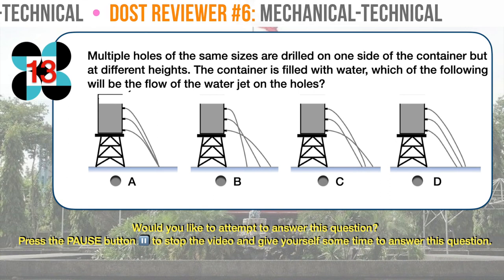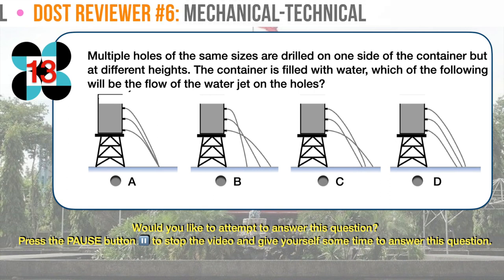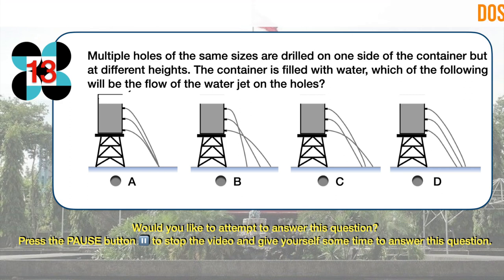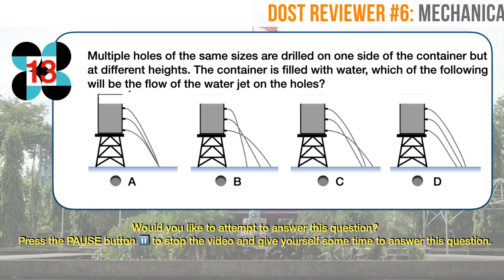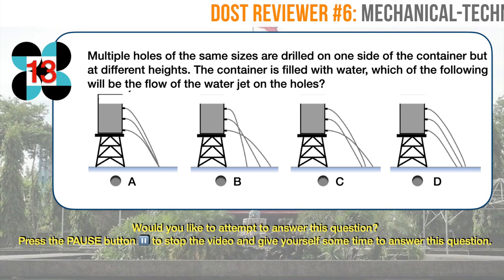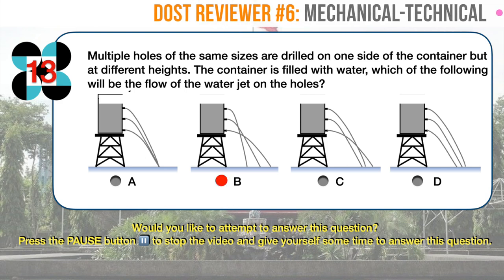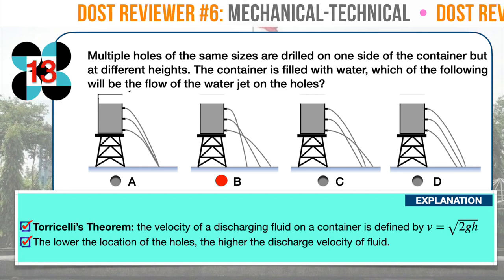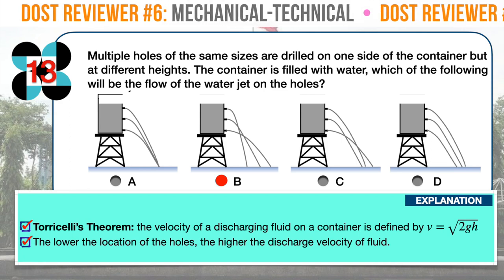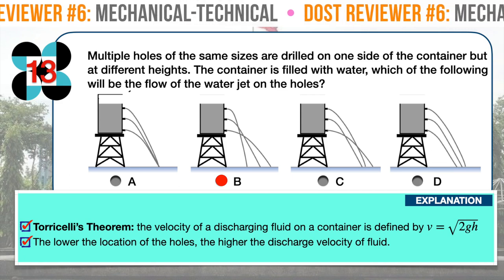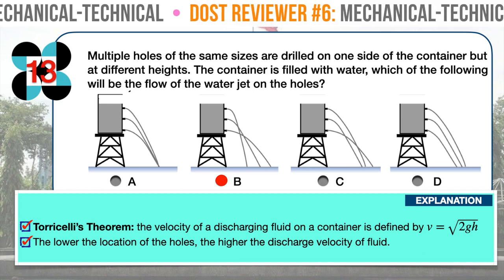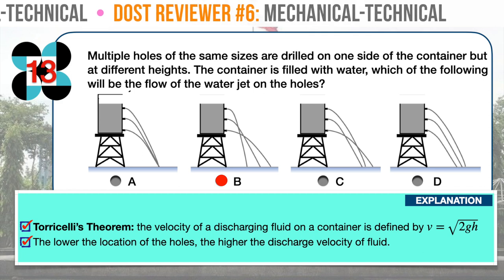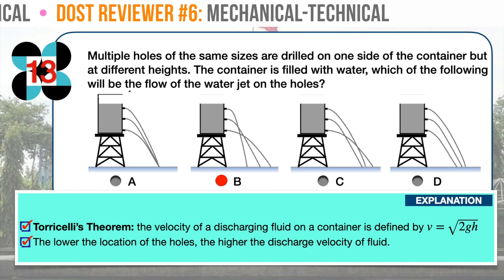Question number thirteen. Multiple holes of the same sizes are drilled on one side of a container but at different heights. The container is filled with water. Which of the following will be the flow of the water jet from the holes? The correct answer is illustration B. In Torricelli's theorem, the velocity of a discharging fluid is defined by V equals the square root of 2GH, where G is the gravitational constant and H is the vertical distance between the fluid surface and the point of discharge. Hence, the lower the location of the holes, the higher the discharge velocity of the fluid. Therefore, illustration B is the most probable depiction of the flow of water from the container.